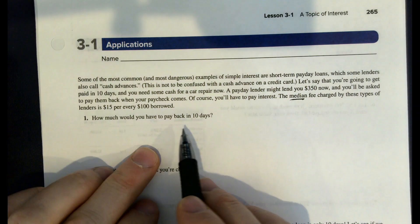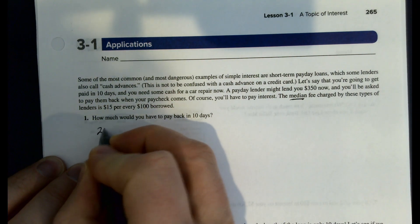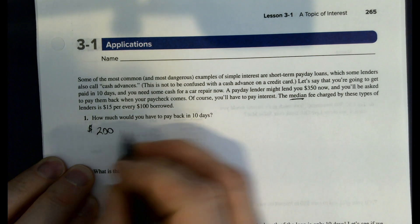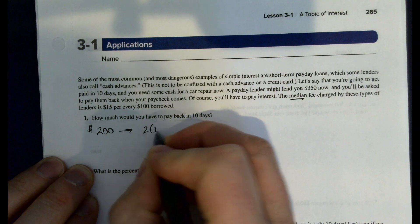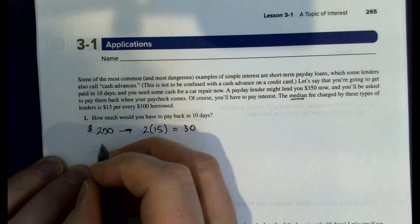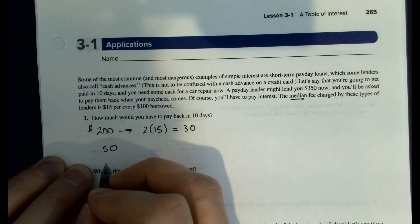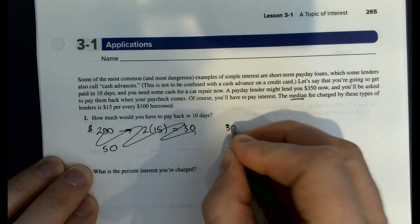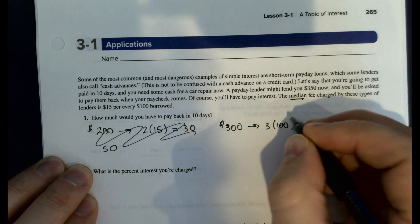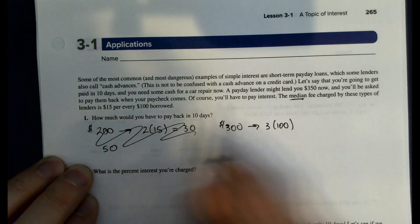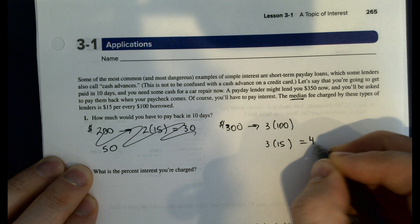So if we think about how much we're going to have to pay back, we could see that there are two full $100. So that would be 2 times 15. So $30 on that, and then a half of a $100. So we have three 100s, that's because 3 times 100 equals 300.